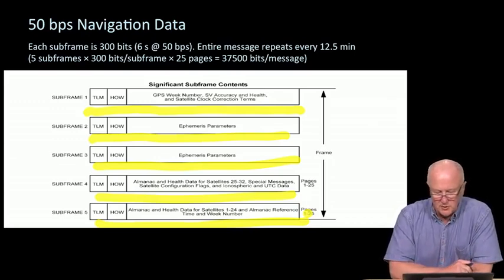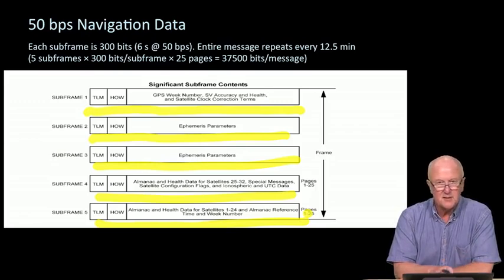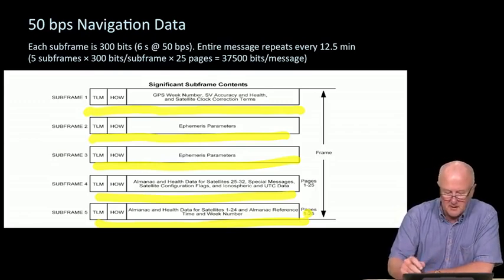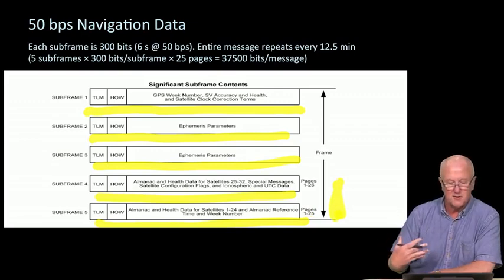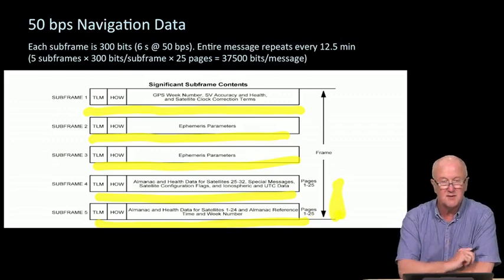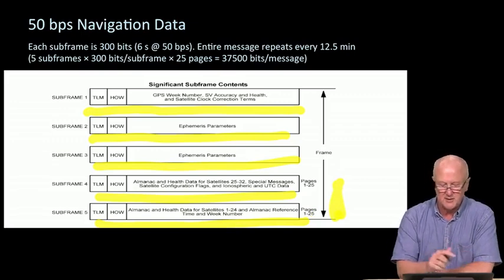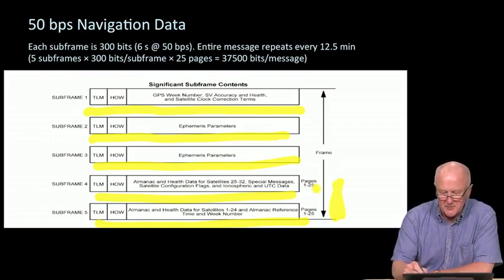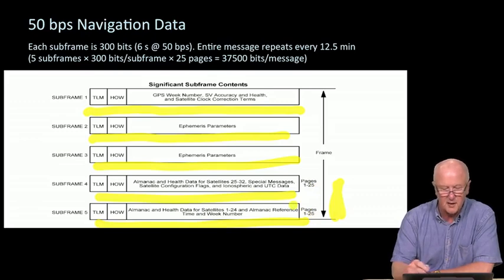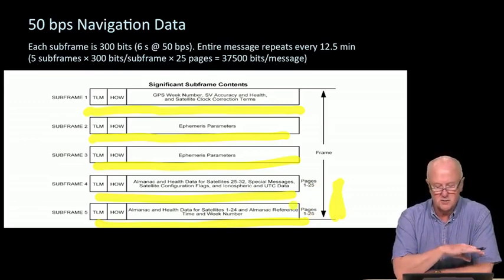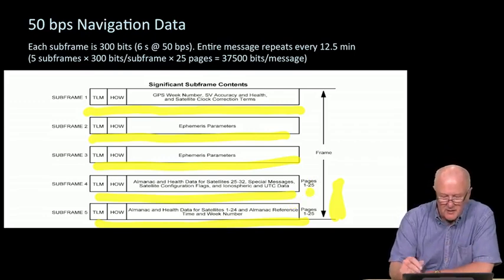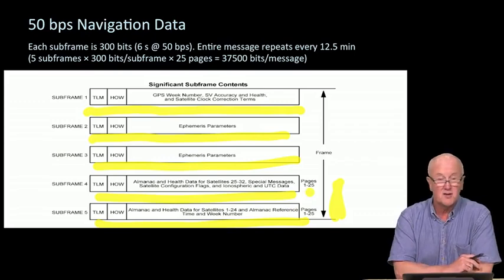Last word on this view graph is the 30 seconds. Well, first of all, subframes four and five don't get to send all of their information in a single subframe. After all, it's the almanac for the entire constellation. So you have to actually page through until you get up to a number that includes all of the other satellites in the constellation. Paging through all of that stuff can take as long as 12 and a half minutes.